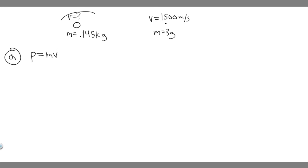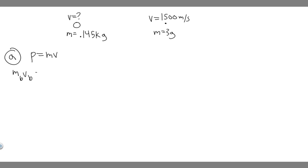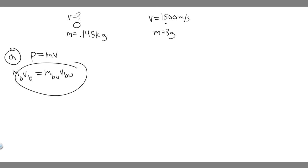What he's saying is the momentum of the ball is equal to the momentum of the bullet. So if momentum is MV, then the mass of the ball times the velocity of the ball has to equal the mass of the bullet times the velocity of the bullet. This has to be true, and we're trying to find the speed for these to be equal.